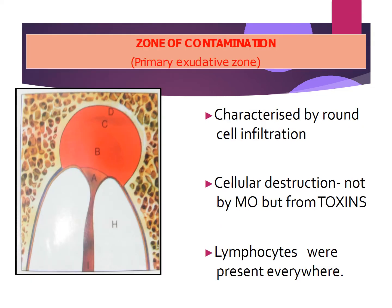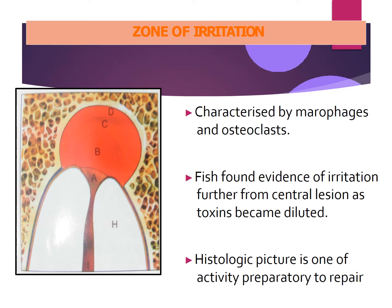After the zone of infection, the second zone is the zone of contamination. Here microorganisms are not present, but we can see the toxins released by the microorganisms. It is also characterized by the presence of round cell infiltration and lymphocytes. As we go from the zone of infection slightly outward, we don't see microorganisms — only toxins are present. The third zone is the zone of irritation, labeled site C, which is characterized by more macrophages and osteoclasts. Fish found evidence of irritation further away from the central lesion as the toxins became more diluted. Inside site A we had microorganisms, inside site B we had more toxins, and at site C we also have toxins but they are slightly more dilute. The histological picture here is more one of activity preparatory to repair.